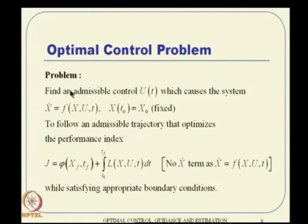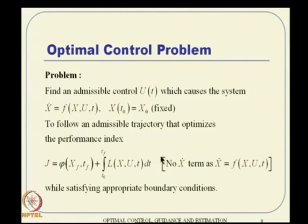The three essential components of a good optimal control problem formulation are: state equations (system dynamics), initial and final boundary conditions, and a cost function that you want to minimize or maximize, which leads to the objective.